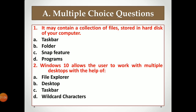What is the thing in which many files can be stored and saved on the hard disk? The options are: A is Taskbar, B is Folder, C is Snap Feature, and D is Programs. Write down the answer if you know it.